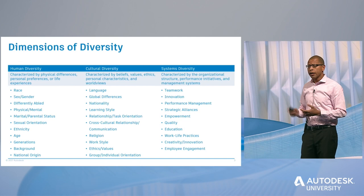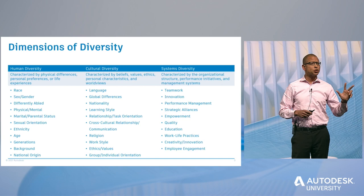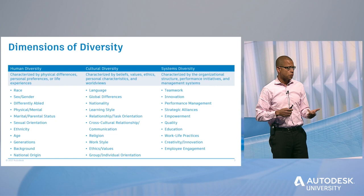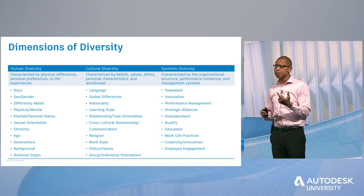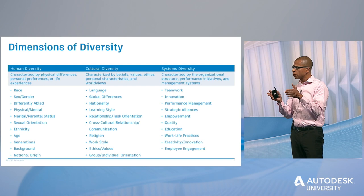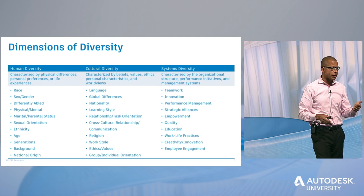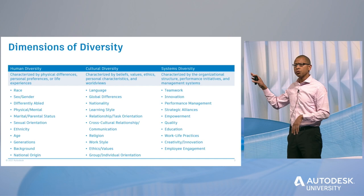When I talk about diversity, at Autodesk we think about it in terms of three different dimensions. One is human diversity — things that tend to be more physically related characteristics, like ethnicity, sex, age, and sexual orientation. The second is cultural diversity — things very core to who I am but that don't necessarily manifest in a physical form, like language, working style, thinking style, and religion. They're changeable but core. The third is systems diversity — how systems interact with each other within an organization.